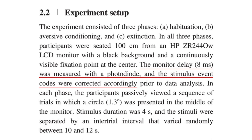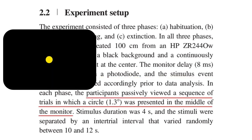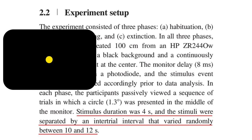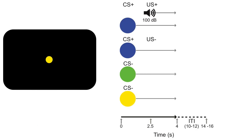Now let's go over the aversive conditioning procedure. Participants saw a sequence of stimuli; each stimulus was a small colored disk in the center of the display. Stimulus duration was 4 seconds followed by an intertrial interval of 10 to 12 seconds. The aversive stimulus was a 1.5 second white noise burst, referred to as the unconditioned stimulus or US. It was 100 decibels, which isn't loud enough to damage the ears but was really unpleasant — it literally knocked me out of the chair the first time I heard it.